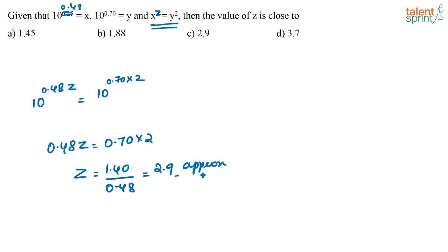So what is my answer? This is nothing but 35 by 12, which is 2.9 approximately — that is option C.